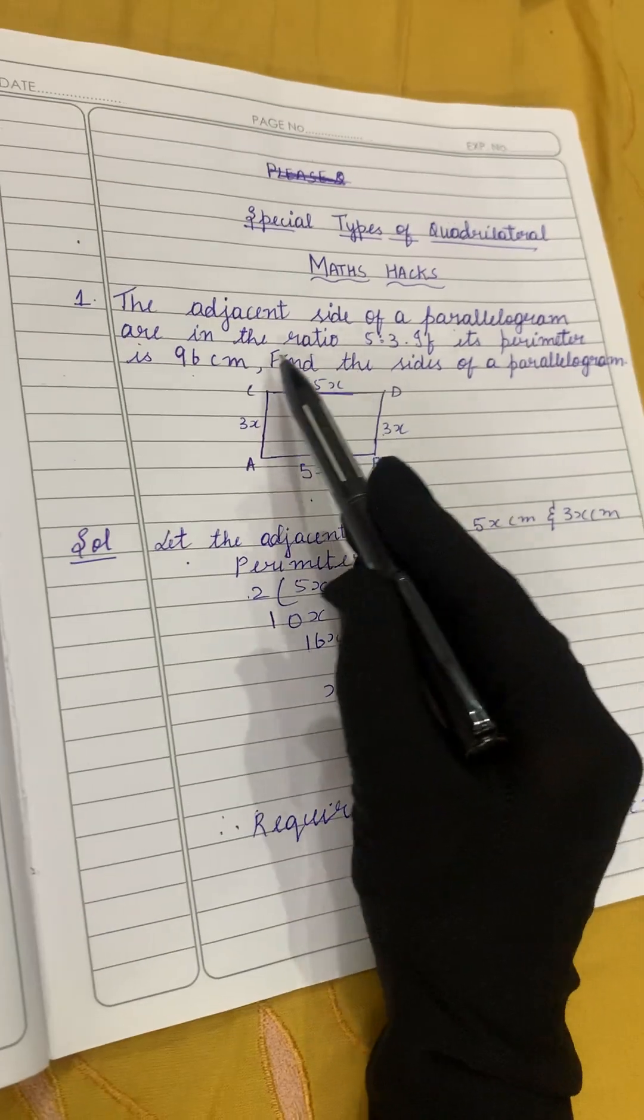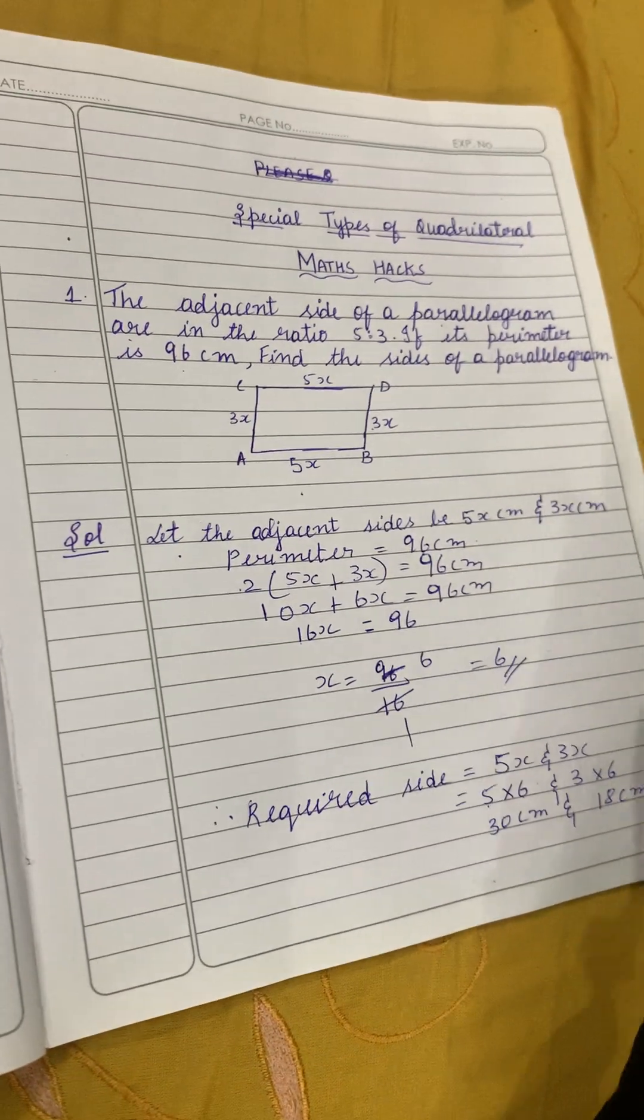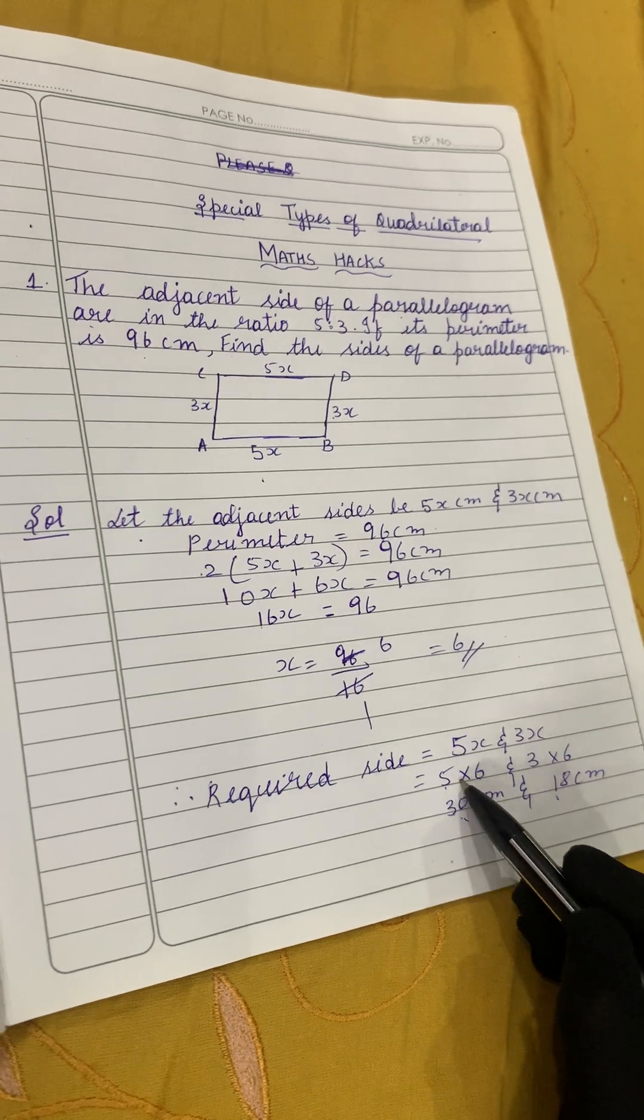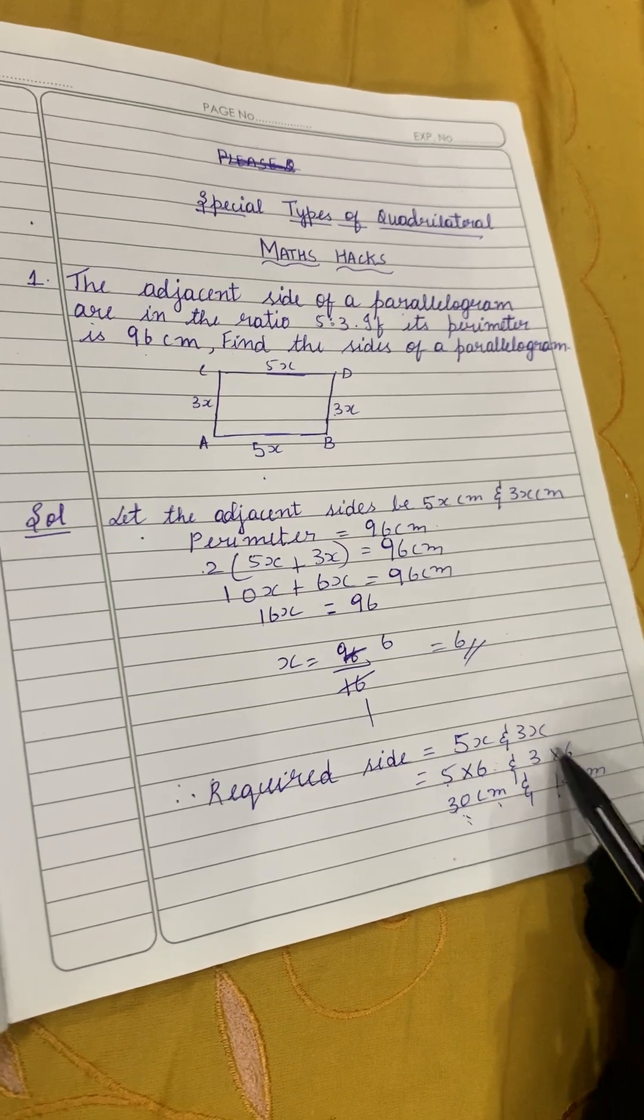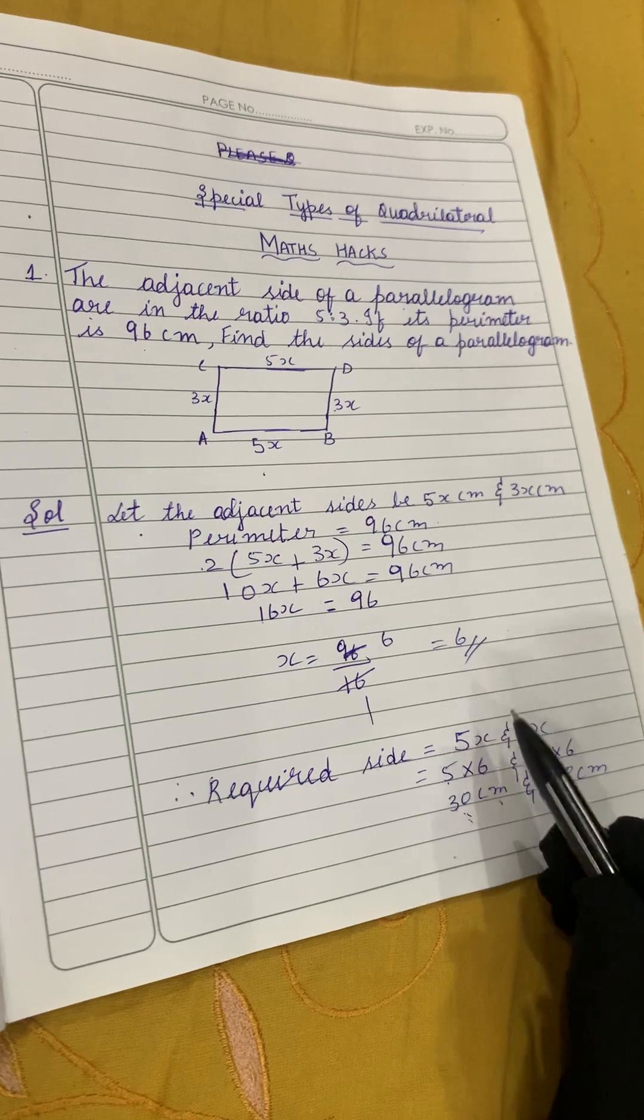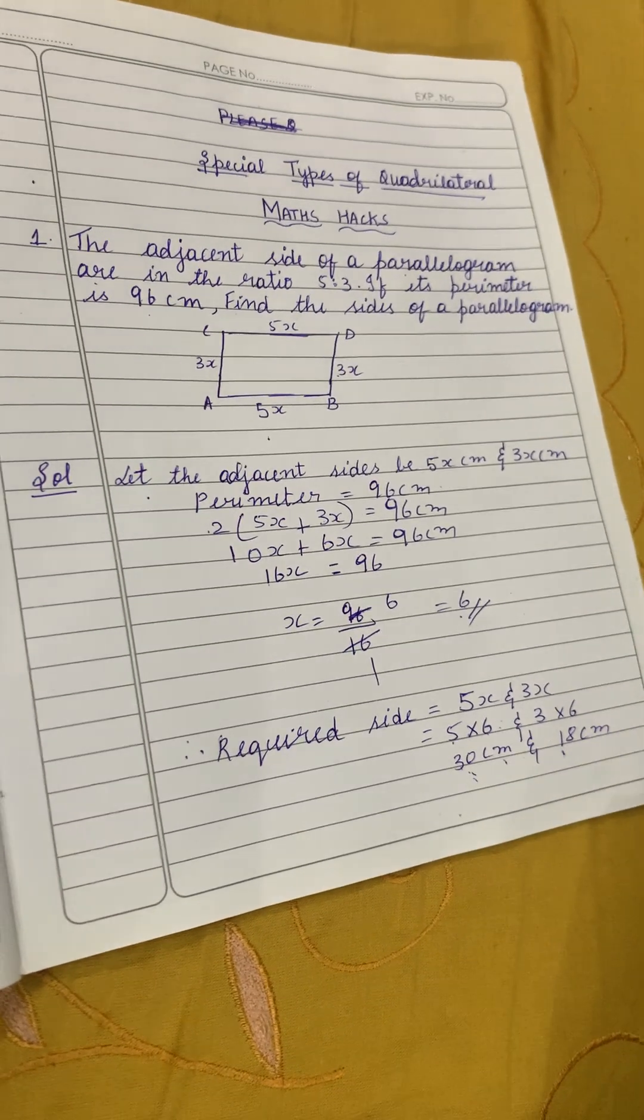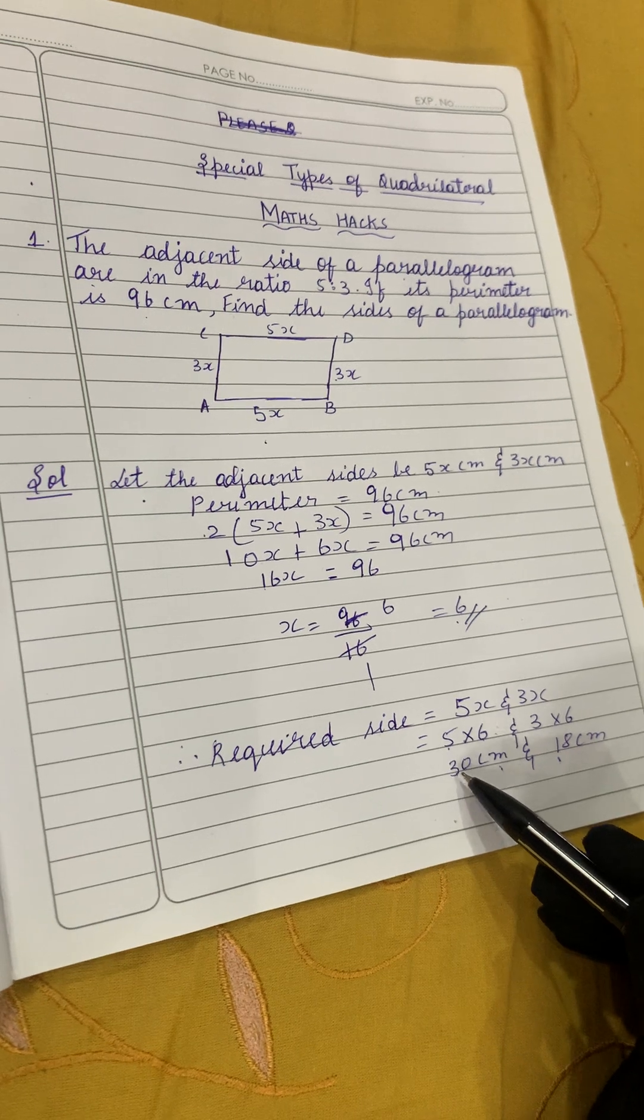So 6 fives are 30 centimeters and 3 sixes are 18 centimeters. They're asking us to find the sides of a parallelogram, so the sides of the parallelogram are 30 centimeters and 18 centimeters. We got the value of x, so in place of x we put 6.